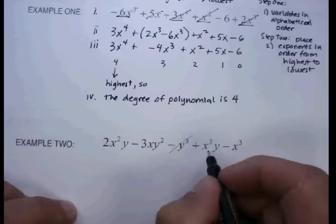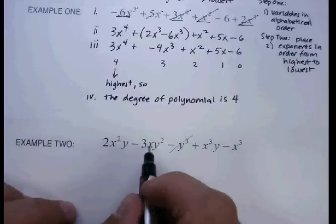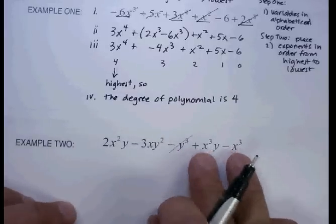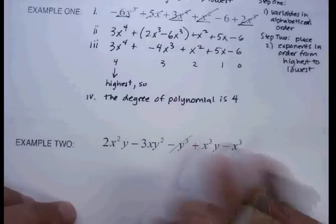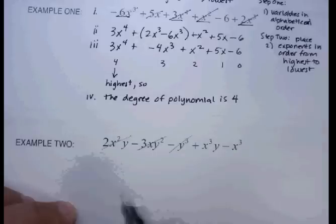Right? Here's an x cubed. Here's an x cubed. These are x to the second. Here's an x to the first. So really what we have to look at are these x cubes. One of these two will be the first term in my new polynomial.